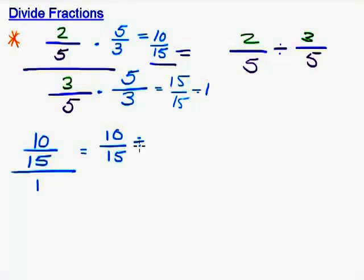So let's divide both sides, the numerator and denominator, by 5. 10 divided by 5 is 2, and 15 divided by 5 is 3. So our final answer is two-thirds.